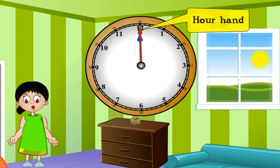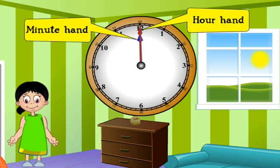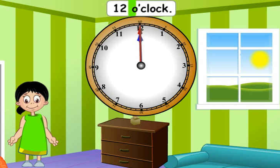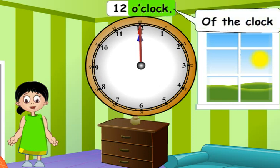Here, the hour hand and the minute hand both are on 12. So, the time shown by the clock is 12 o'clock. O'clock is the short form of 'of the clock.'